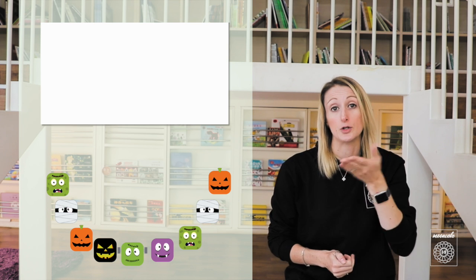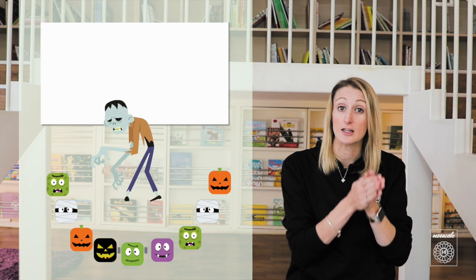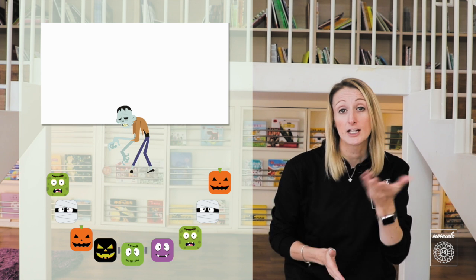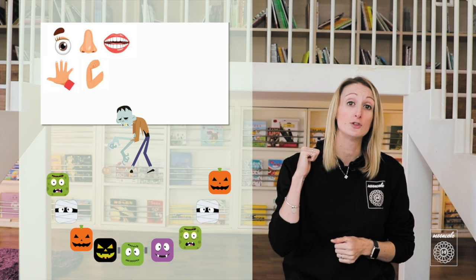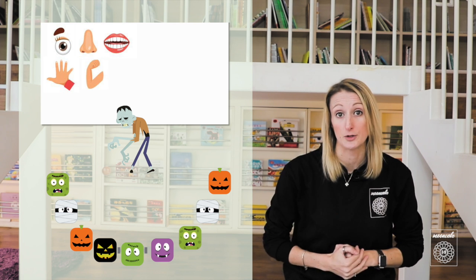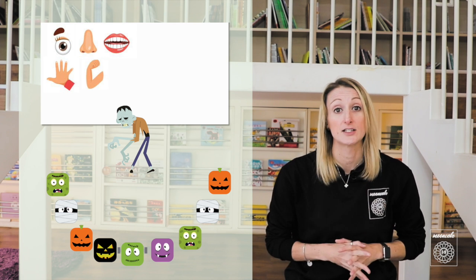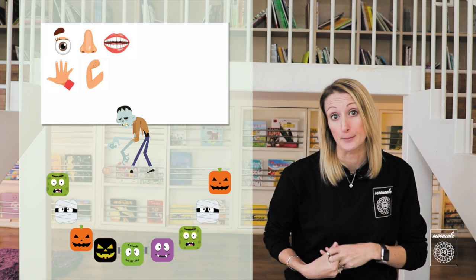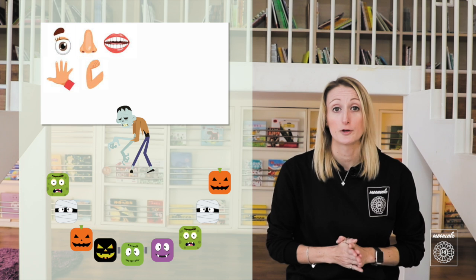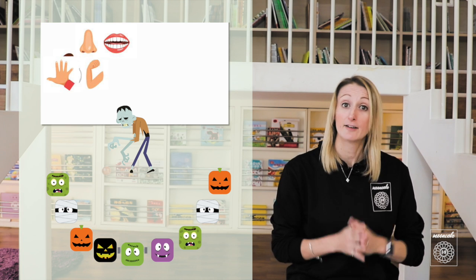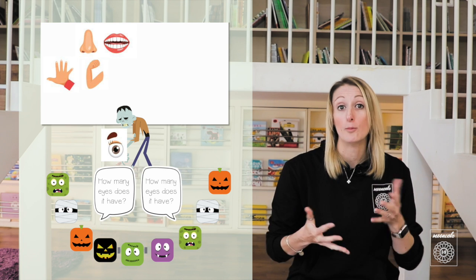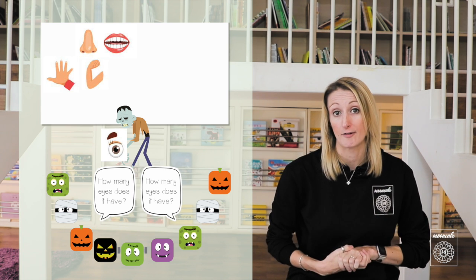Start by positioning the class in a semi-circle with you, the teacher, in the middle. Introduce those body part flashcards one by one, placing them on the board behind you as you do. Explain to the kids that you're going to work together to create a monster. Start with the first body part — for example, eyes — and have the whole class ask together: how many eyes does it have?